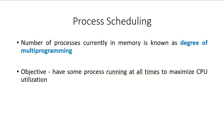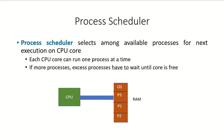In this video we are going to discuss the scheduling of processes. The number of processes currently available in the main memory is known as the degree of multiprogramming. The objective of the system is to have some process running at all times so that the utilization of the CPU can be maximized. It is the job of the process scheduler to select one process amongst all the available processes for the next execution on the CPU core.